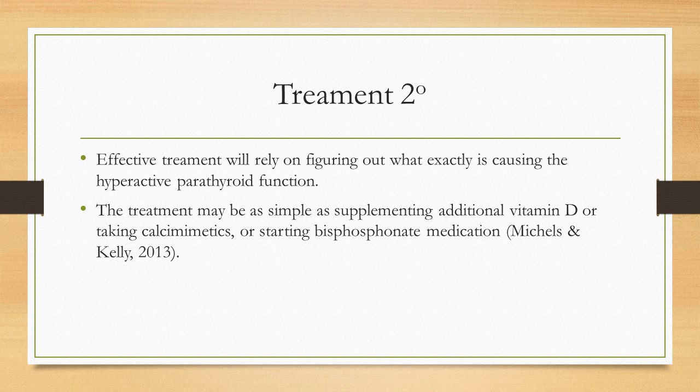Treatment of secondary hyperparathyroidism: effective treatment will rely on figuring out exactly what is causing the hyperactive parathyroid function. This could be due to chronic kidney disease, celiac disease, vitamin D deficiencies, and so on. The treatment may be as simple as supplementing additional vitamin D, taking calcium emetics, or starting bisphosphonate medication.